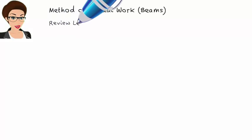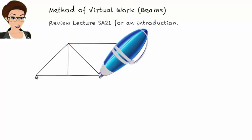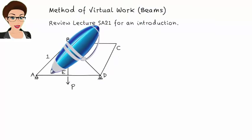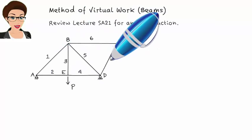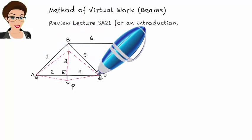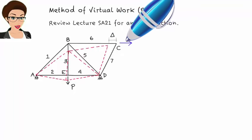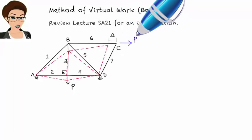Let's start by reviewing the method using a truss structure. Consider this truss. Under the applied load, it is going to displace like this. To determine a joint displacement, say horizontal displacement at C, we place a virtual load at the joint. In this case, a horizontal load at C.